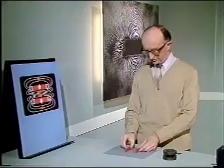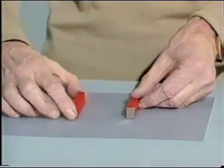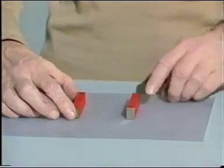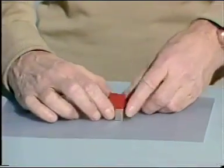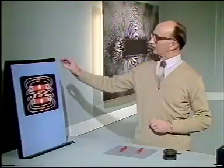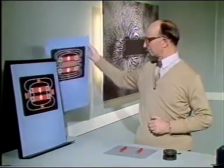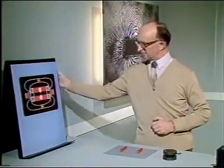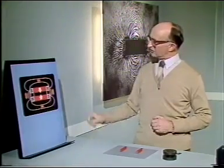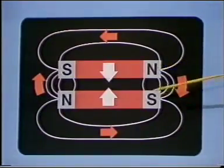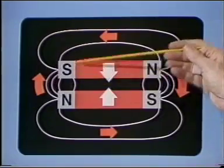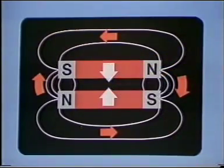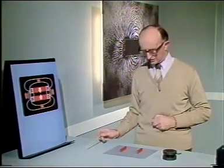If I turn the magnets round so that north is now facing south, they attract one another. This can be shown on a diagram. Here the lines of force now running from north to south are, so to speak, pulling the magnets together, and there's a force of attraction, as again shown by the arrows. That much, I'm sure, is very familiar to you.